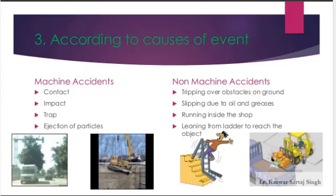The third category is according to the causes of the event. The first type is machine accidents, which can occur through contact, impact, trapping, or ejection of particles. Non-machine accidents include tripping over obstacles on the ground, slipping due to oil and grease, running inside the shop, or leaning from a ladder to reach an object.